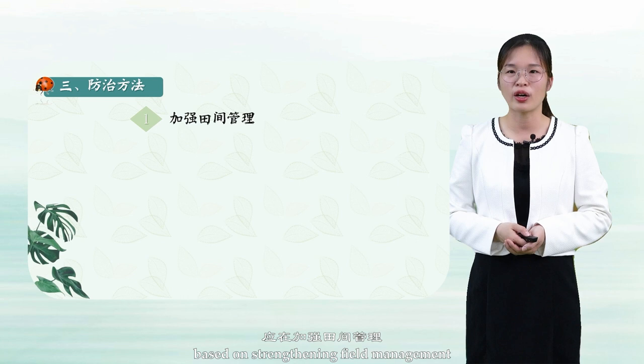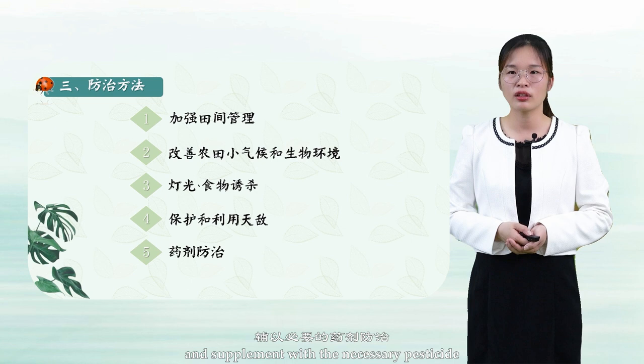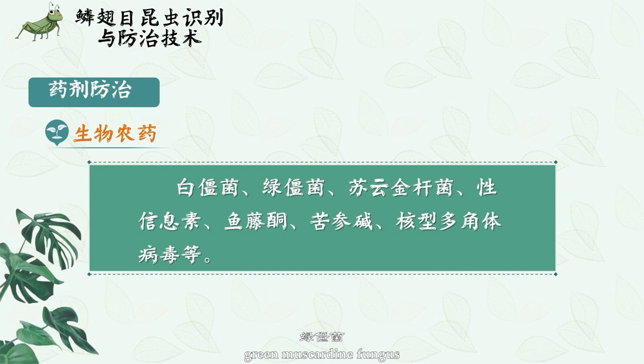Next, we will study the control technology of Lepidopteran pests, based on strengthening field management, improving the microclimate, and biological environment of the farmland. Use lights and food as traps, protect and use the natural enemies, and supplement with the necessary pesticides. Biological pesticides include Beauveria bassiana, green muscardine fungus, Bacillus thuringiensis, sex pheromone, rotenone, matrine, nuclear polyhedrosis viruses, etc.